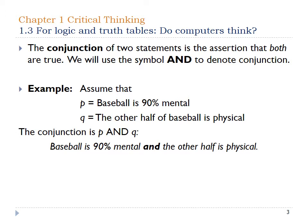Their example is talking about baseball. It says baseball is 90% mental, and the other half of baseball is physical. If you think about that mathematically and logically, it can't make sense — you can't have 90% mental and 50% physical. However, it is a good example of things people say and think about. So the conjunction in this case is: baseball is 90% mental and the other half is physical.